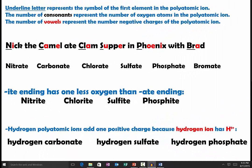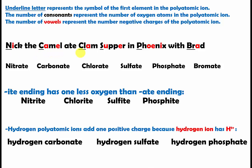Here is a trick you can use to determine the number of oxygen atoms and the number of negative charges in some of the most common polyatomic ions, using the sentence: 'Nick the camel ate clam supper in Phoenix with Brad.' We look at three patterns.